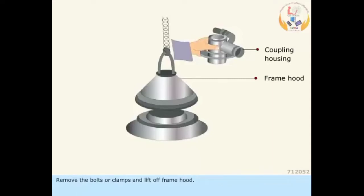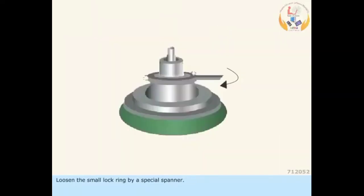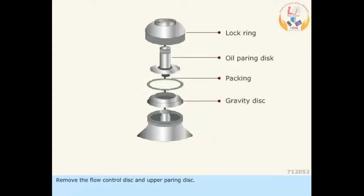Remove the bolts or clamps and lift off the frame hood. Loosen the small lock ring with a special spanner. Remove the flow control disc and upper pairing disc.